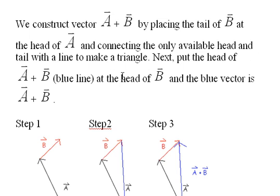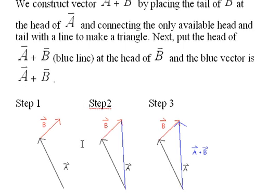Next we put the head of a plus b, the blue line at the head of b, and the blue vector is a plus b. So how you add two vectors is this. I'm going to add a and b, so I put b on top of a, like this, and then I draw this blue line here, which is going to be, eventually, it's eventually going to be a plus b.